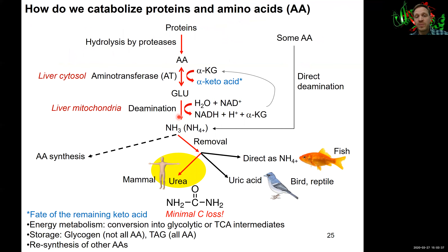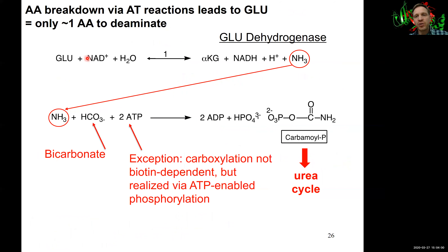Now that we have free ammonium — which in solution typically occurs as the ammonium ion and is toxic — we want to remove it efficiently. In mammalian systems this is done through the fully conserved urea cycle. The first step is binding the ammonia into a carrier: we take ammonium and have it undergo a condensation with bicarbonate, using ATP to do so.